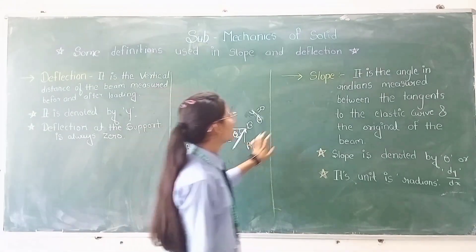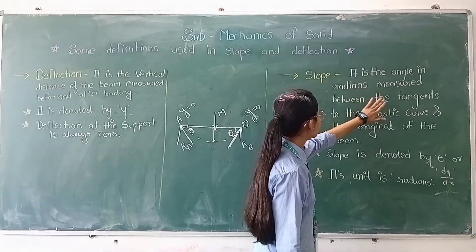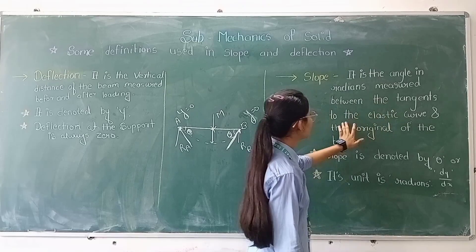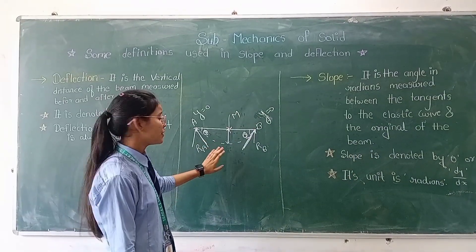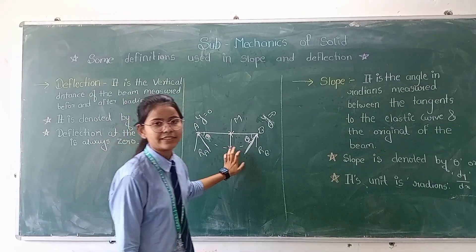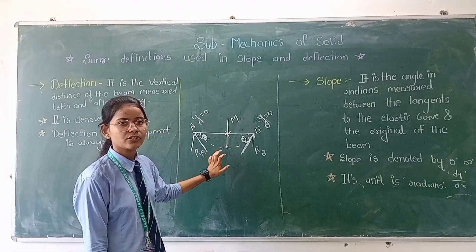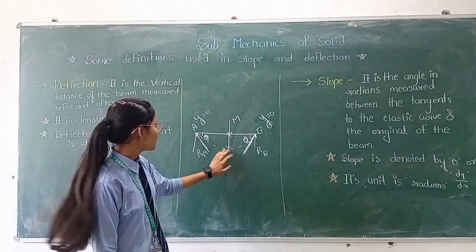I will say that the definition of slope is the angle in radians measured between the tangent to the elastic curve and the original of the beam. This curvature of the beam is called the elastic curve. The tangent drawn to the angle of this beam is called slope.